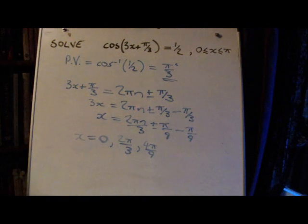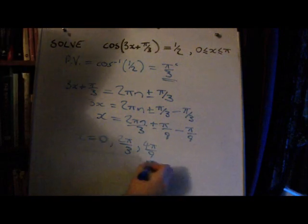With n equals 2, we won't generate any solutions in the interval. So these are the 3 solutions.